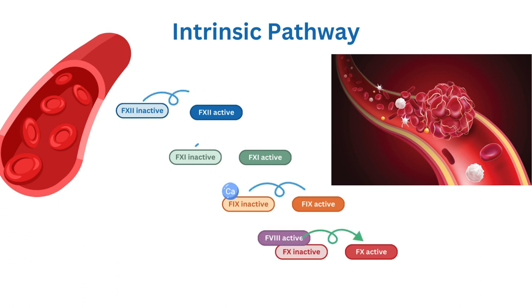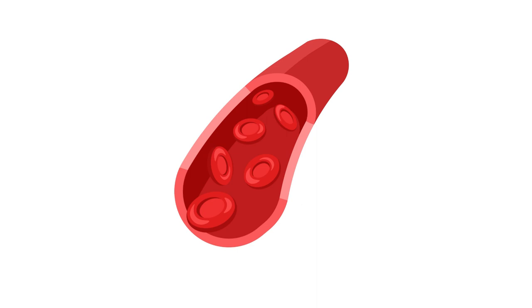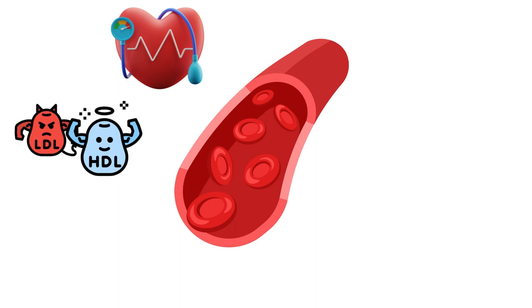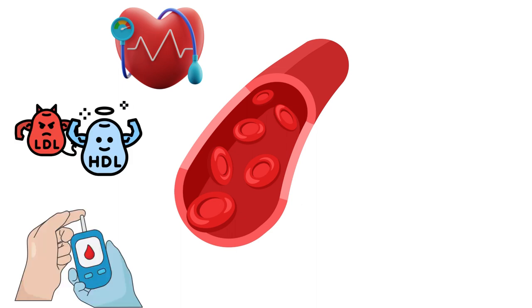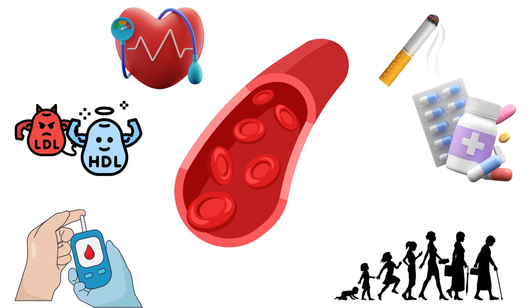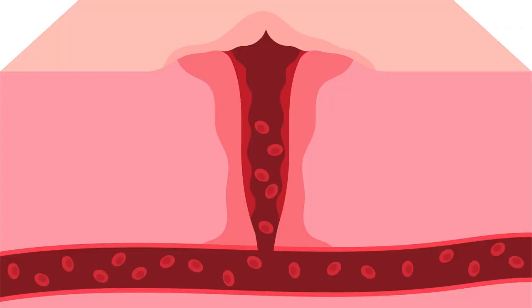Here are some examples of factors that can damage the endothelium: high blood pressure, high levels of cholesterol or lipids in the blood, diabetes, smoking, certain medications or toxins. Also, certain hormones can potentially damage the endothelium.